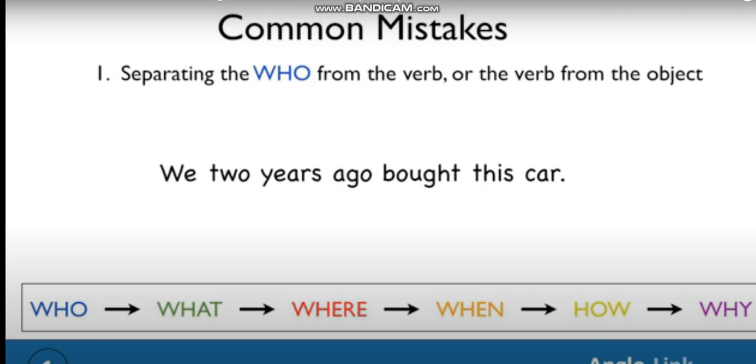Separating the who from the verb or the verb from the object. We two years ago bought this car. Unnatural. Please correct the mistake. How would you say? We bought this car two years ago. Thank you.